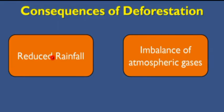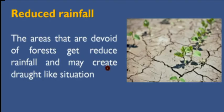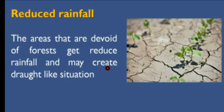The consequences of deforestation: the first one is reduced rainfall. Areas that are devoid of forests get reduced rainfall and may create drought-like situations. Places where reduced rainfall occurs can lead to desert or drought conditions. This is the first consequence of deforestation.